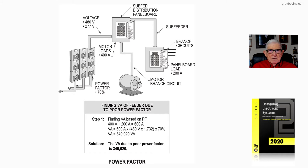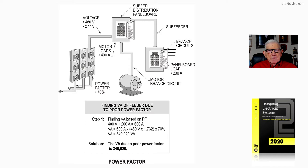This figure 15-2 from Stockup's Electrical Design Book, Volume 2, shows a condition of poor power factor. When you look at the illustration, we show a 400-amp motor load, voltage is 480-volt, 277, and then we have a load in this panel board of 200 amps, giving us a total of 600 amps. Notice the power factor: 70 percent.